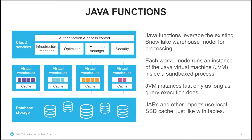What's exciting about Java functions is that they leverage the existing Snowflake warehouse model for processing. This means there's no additional cost to run Java code inside of Snowflake beyond the compute credits that you pay for normal queries. Each worker node runs an instance of the Java virtual machine inside of a sandbox process. The JVM instances last only as long as query execution does, and we throw them away at the end of the query. Jars and other imports use local SSD cache just like with tables, so you get a benefit from reusing the same jars across queries.